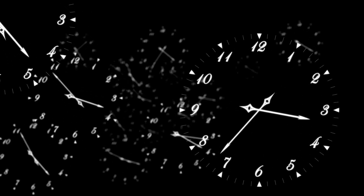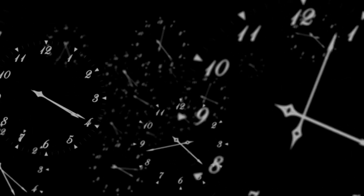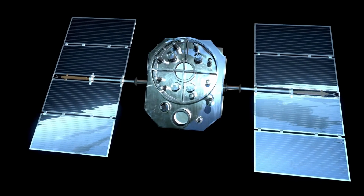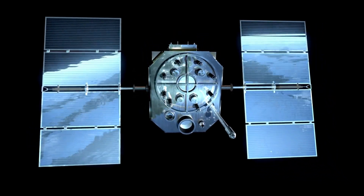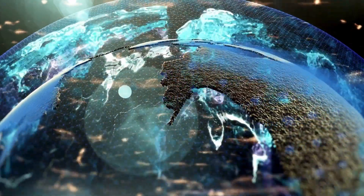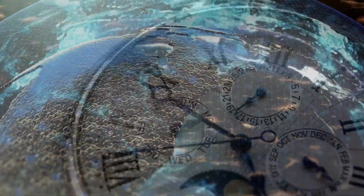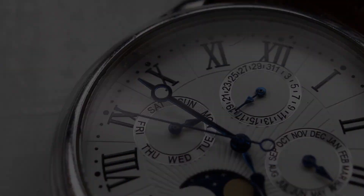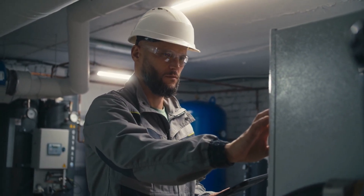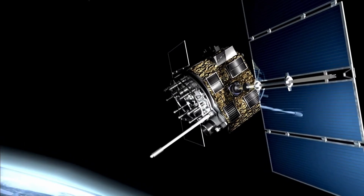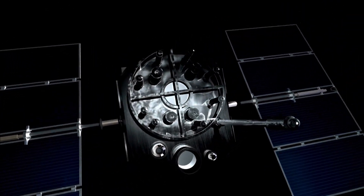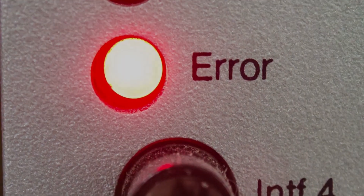Time dilation isn't just theoretical or a concept for science fiction — it's something we experience daily. GPS satellites orbit Earth at high speeds and experience time slightly slower than we do on the ground. Simultaneously, they are farther from Earth's gravitational pull, which causes time to run slightly faster for them. Engineers must account for both types of time dilation to ensure GPS systems remain accurate. Without these adjustments, GPS calculations would quickly become useless, with errors accumulating by several kilometers each day.